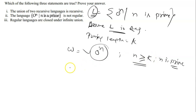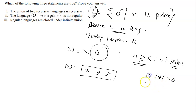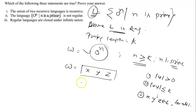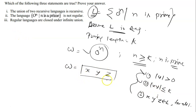By the pumping lemma, w can be partitioned into three parts x, y, z satisfying: (1) the length of y is greater than zero, (2) the length of xy is less than or equal to k, and (3) x y^i z belongs to L for all i. These three conditions must be satisfied.